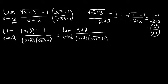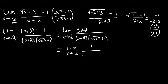Now we have a case where we can cancel out individual factors of our numerator and denominator — namely the x plus 2 — because it is repeated in both the top and the bottom of the fraction, so we can cancel it out. After canceling, we are left with the limit as x approaches negative 2 of 1 over the square root of x plus 3 plus 1.